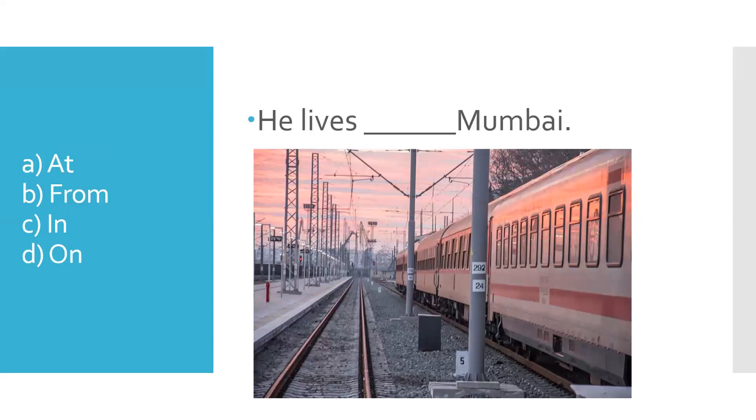All right. Try this. He lives, dash, Mumbai. Should it be at, from, in, or on? The right answer is in. He lives in Mumbai.